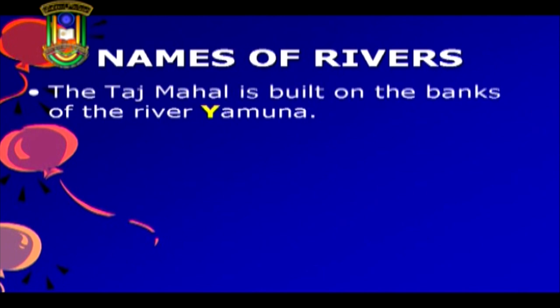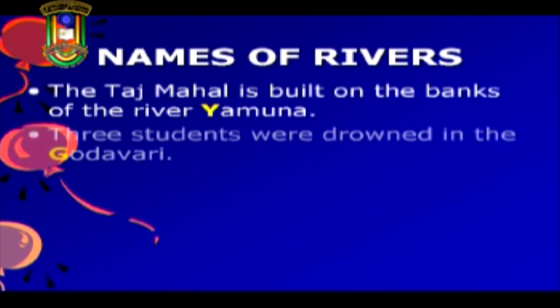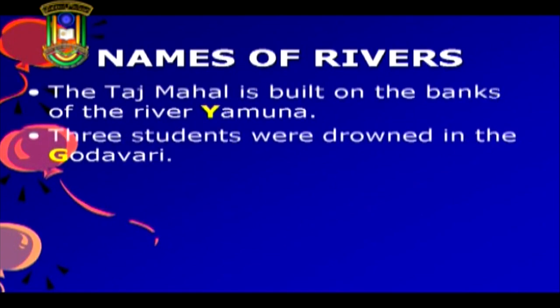Now let us see how capital letters are used to indicate names of rivers. The Taj Mahal is built on the banks of the river Yamuna. Three students were drowned in the Godavari. Yamuna and Godavari are names of rivers and need to be capitalized. You could be talking about the Brahmaputra, the Narmada, the Tapti, the Ganges, or any other river — every time you use the name of a river, remember to begin it with the capital letter.